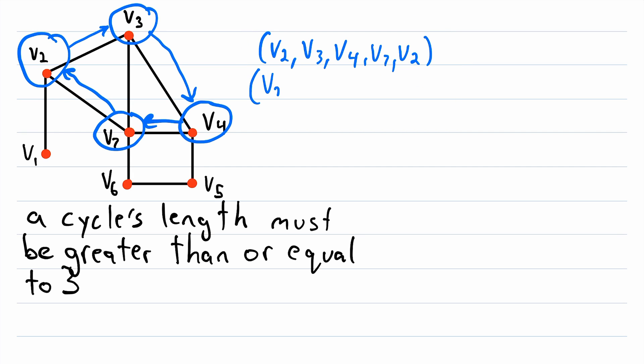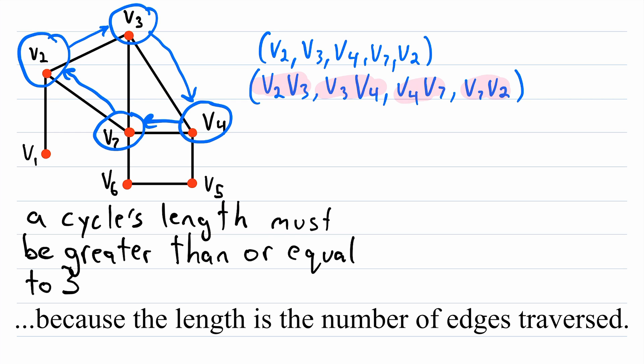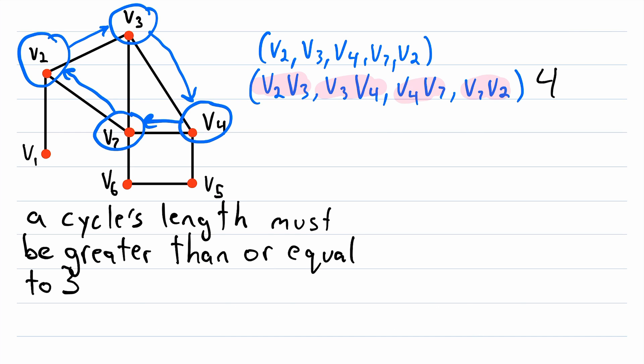You might see a cycle being represented as a sequence of edges instead. So this method just uses the edges that were traversed instead of the vertices, but it does indeed refer to the exact same way of moving through this graph. To find the length of a cycle when it's being represented by a sequence of edges, of course all you have to do is count all the edges in the sequence. This gives a length of four as we would expect since it refers to the same cycle.